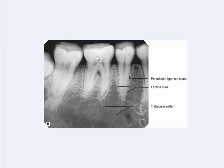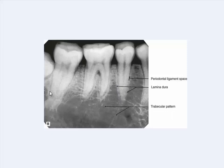In this X-ray we can see the normal anatomical landmarks such as the teeth, their root morphology, and the periodontal ligament space. You can see here this is a radiolucent line where the periodontal ligament is present. The lamina dura is a very thin calcified bony landmark — a radiopaque line extending from the crest of the alveolar ridge to the apex of the teeth, surrounding the teeth from one crest of the alveolar ridge to another.